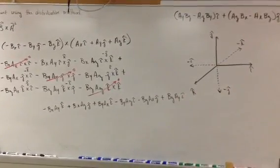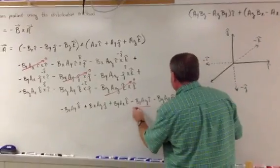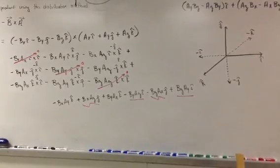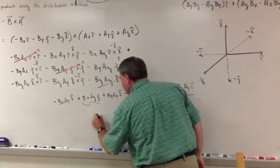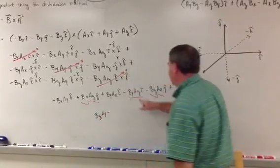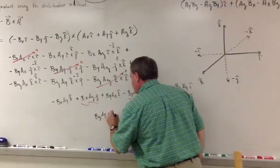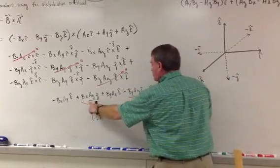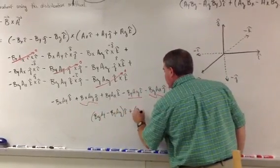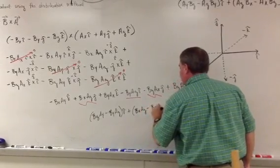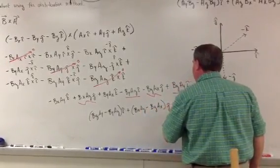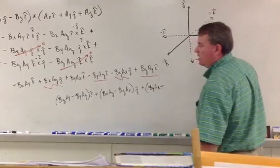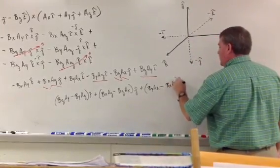Now that we have that, we can underline like directions — i, i, j, j — and group these terms. That gives: (bz·ay minus by·az) in the i-direction, plus (bx·az minus bz·ax) in the j-direction, plus (by·ax minus bx·ay) in the k-direction.